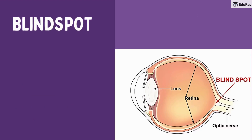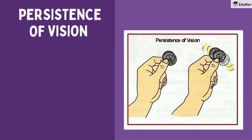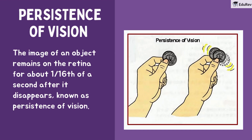There is also something called a blind spot in our eyes. At the junction of the optic nerve and retina, there are no light-sensitive cells — no rods or cones — due to which no vision is possible at that spot. This is called the blind spot. When you look at fast-moving objects they appear blurred; this happens because of persistence of vision. The image of an object remains on the retina for about 1/16th of a second after it disappears, known as persistence of vision.